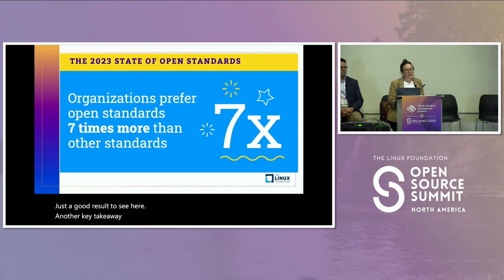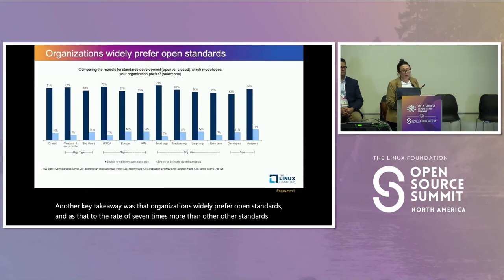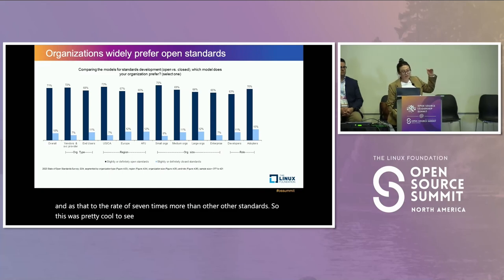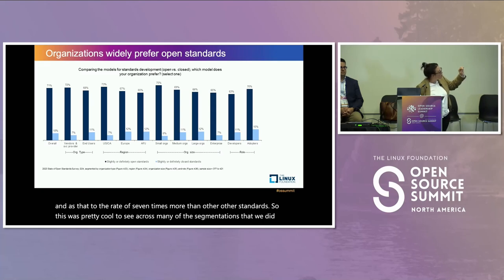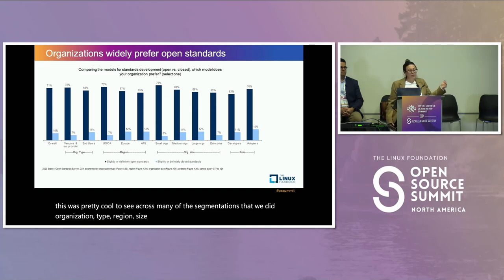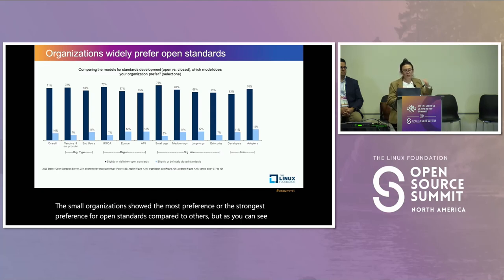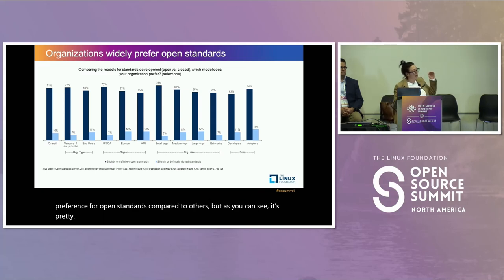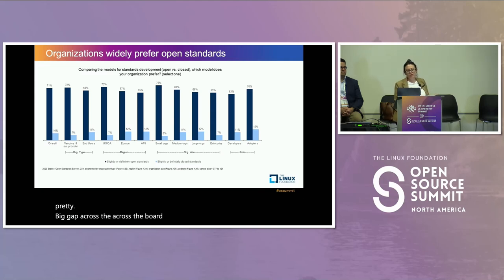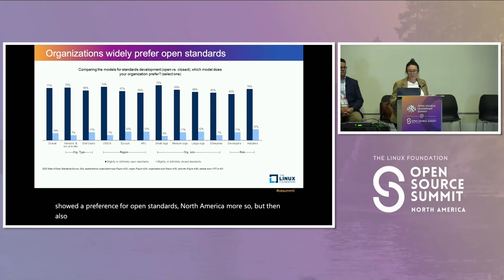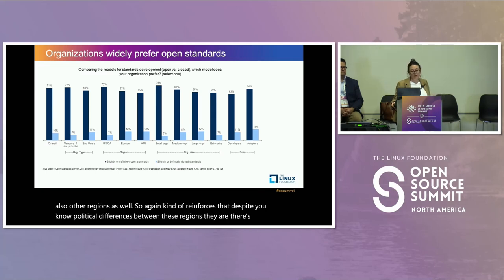Organizations widely prefer open standards, at a rate of seven times more than other standards. Across many segmentations — organization type, region, size, and role within the company — there was a vast preference for open standards. Small organizations showed the strongest preference compared to others, but it's a pretty big gap across the board. Geographically, all regions clearly showed a preference for open standards, North America more so, but other regions as well — reinforcing that despite political differences between regions, there's a great preference for open standards.